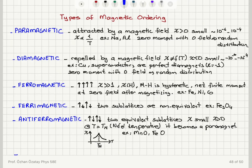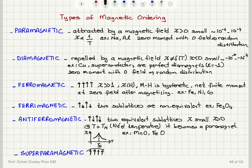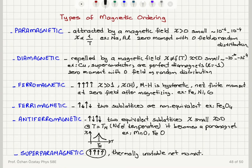A ferromagnet can become superparamagnetic. Superparamagnetic means you still have moments lined up in some direction, but they can spontaneously flip to the opposite direction. This is a thermally unstable net moment. We will also discuss this when considering memory applications of magnetic materials.